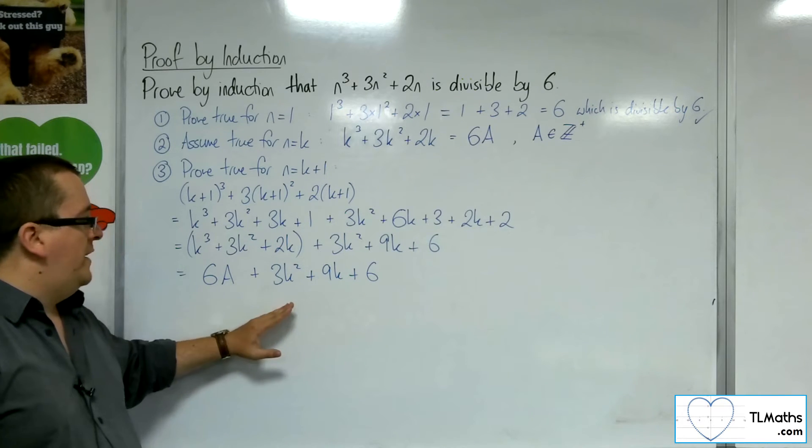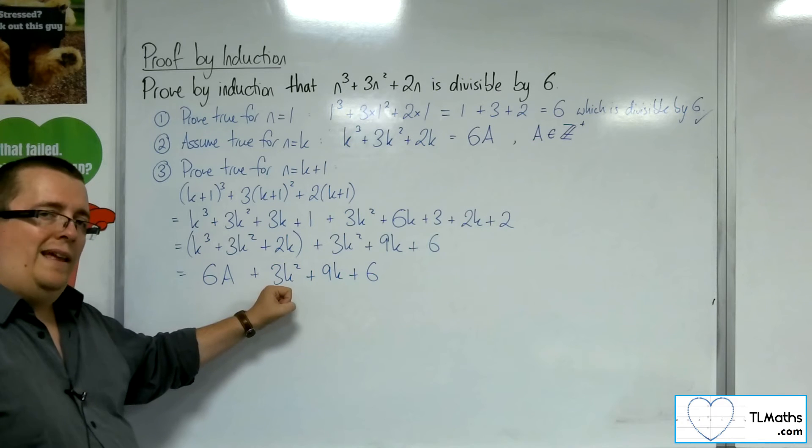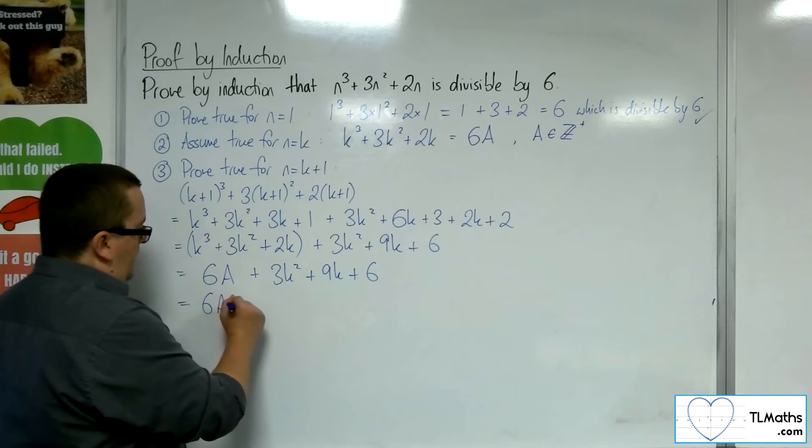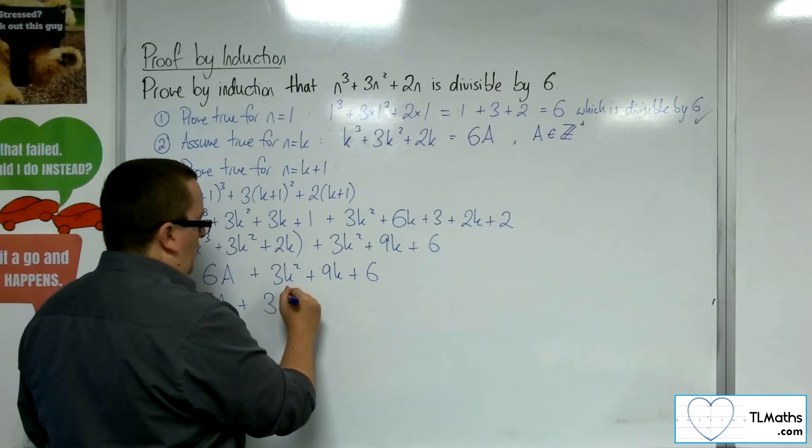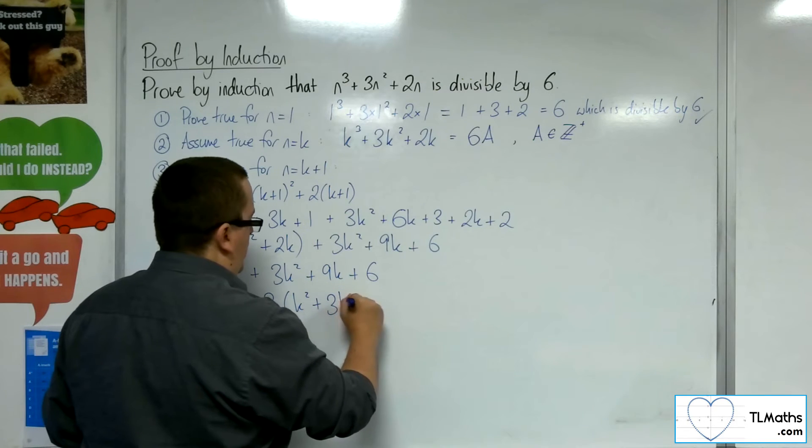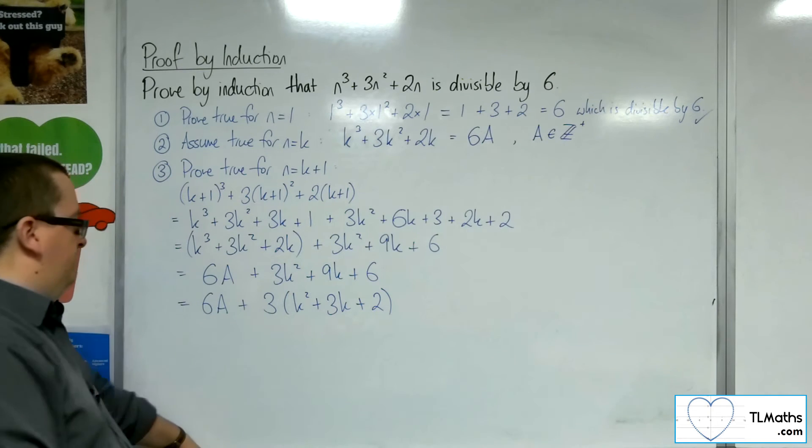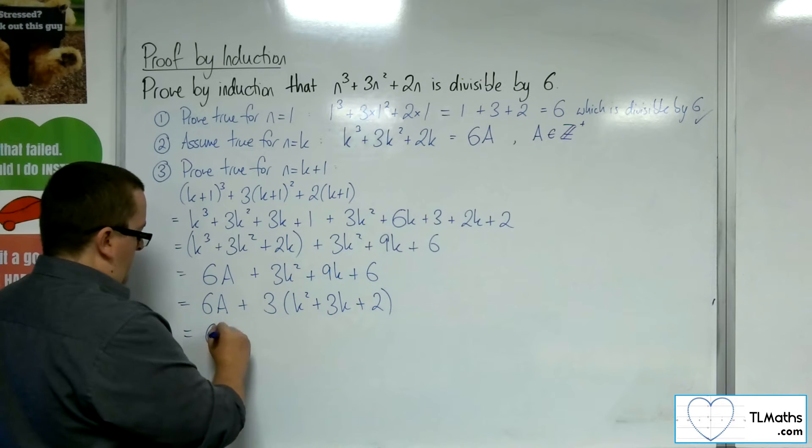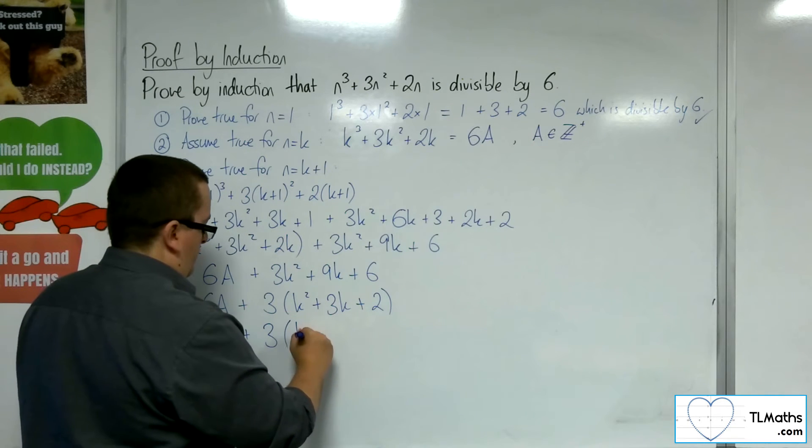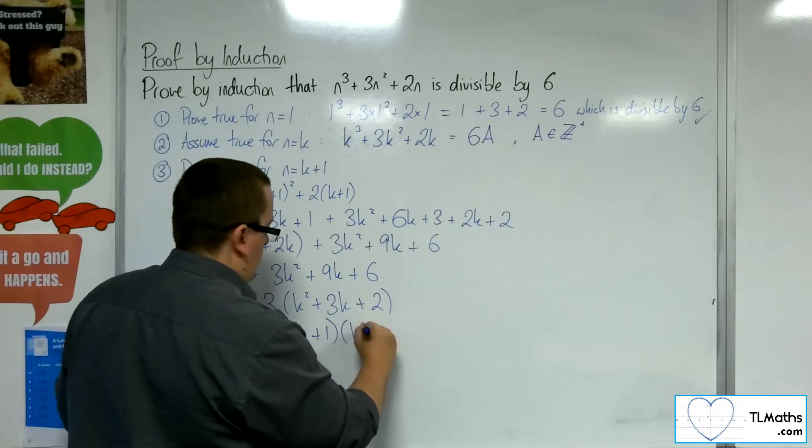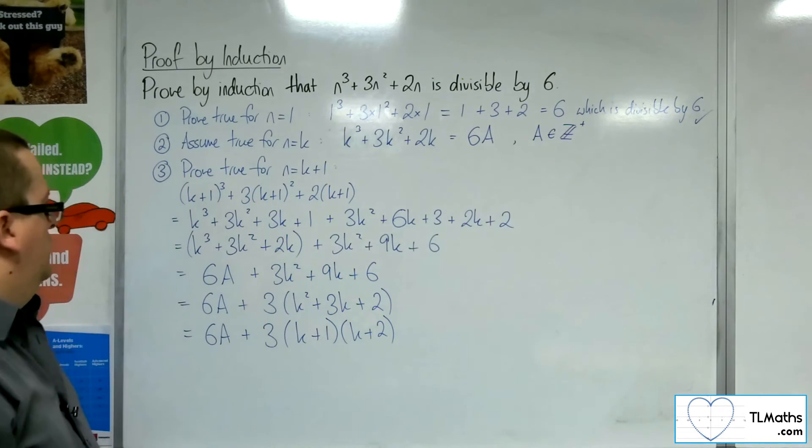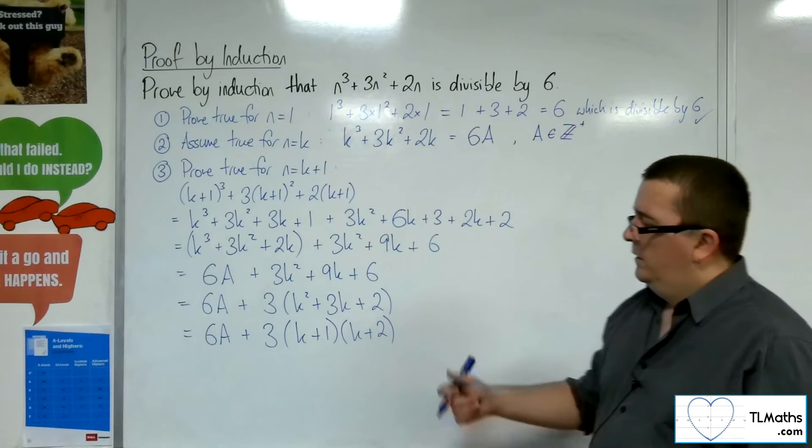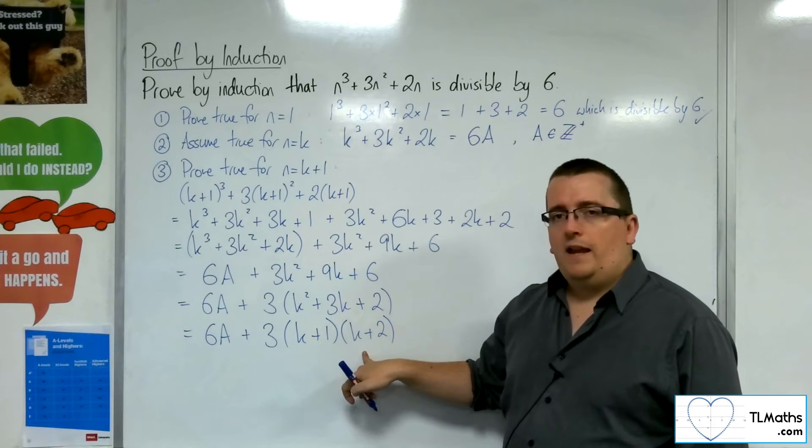I can bring a common factor of 3 out. So, let's see how that works for us. So, we've got 6a plus 3 lots of k squared plus 3k plus 2. And this can be factorised to k plus 1 times k plus 2.